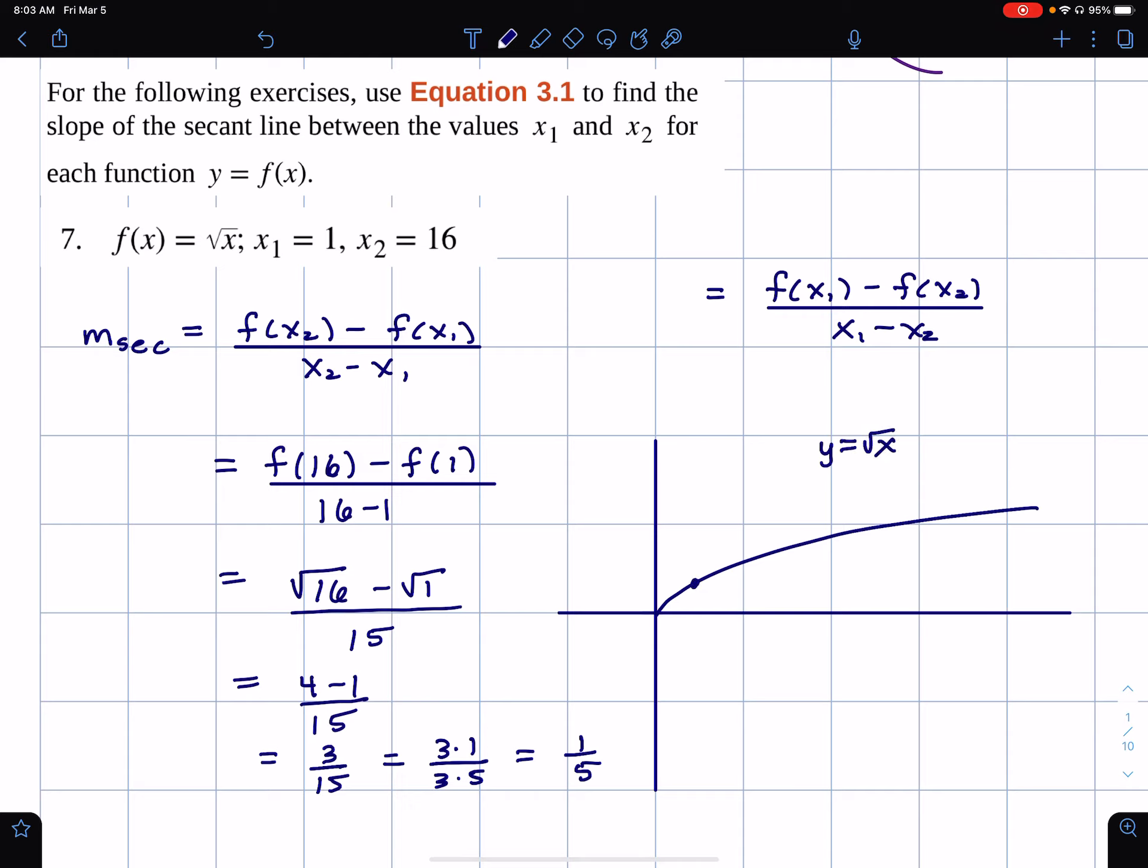the secant line is between two points here. We have 1, 1, and the other point is 16, 4.